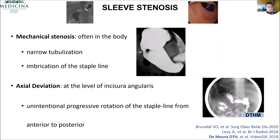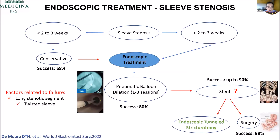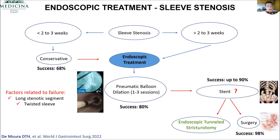Sleeve stenosis — we have two types of stenosis. Sometimes you can also use the CRE balloon, but I do not recommend it. I think we should always use the Achalasia balloon dilation. When you have axial deviation, for sure you need to use the Achalasia balloon dilation. I don't use the CRE balloon — I just use the pneumatic balloon dilation. Usually it starts with 30 millimeters; I try a second time with 30, and if it doesn't work I go to 35. I usually don't go to 40 — the perforation case I showed was with a 40 mm balloon, so after that I became more afraid of 40 mm dilation. Stents — a lot of people try to use them, but I also don't like them due to the high migration rate. What we do now is the technique described by Chris Thompson: endoscopic tunneled stricturotomy. If it fails, we send the patient to surgery, but most of the time I think we can avoid that — except when you have a completely twisted sleeve, then surgery is better.